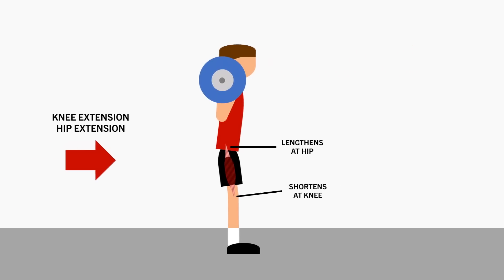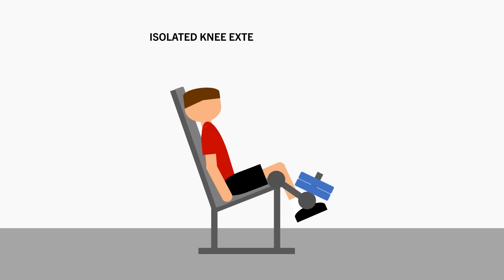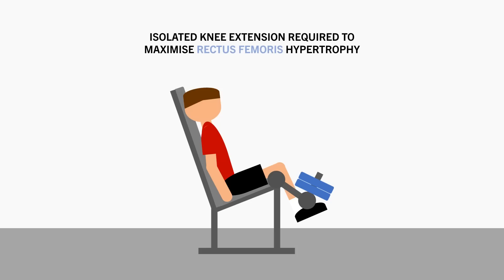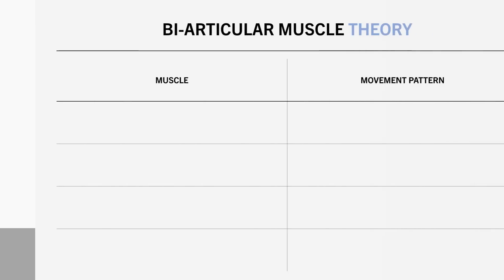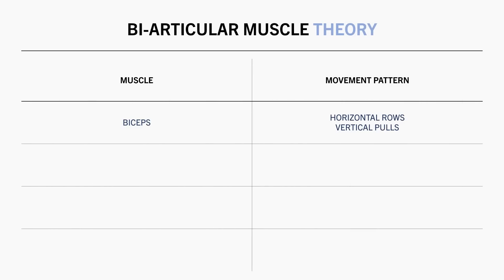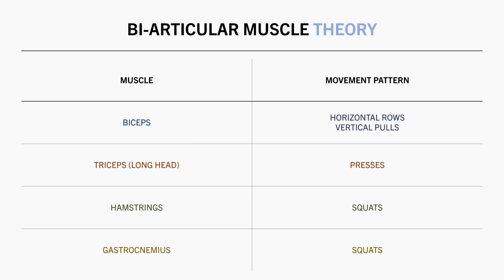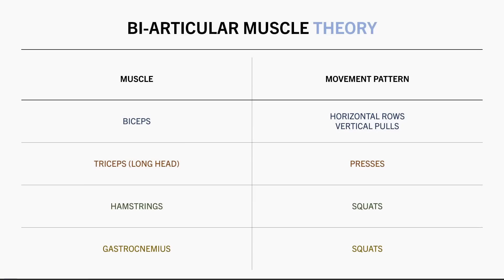So to maximise rectus femoris growth, we probably need to include an isolated knee extension exercise like the leg extension machine. The biarticular muscle theory also applies to other muscles, such as the biceps during horizontal rows and vertical pulls, the long head of the triceps during any pressing movements, the hamstrings during squat patterns, and the gastrocnemius during squat patterns. Because of this, we may need to include more or less exercises to maximise growth of each muscle group, and implement different exercise variations to make sure we train each region of a muscle group.